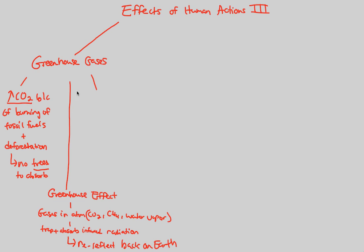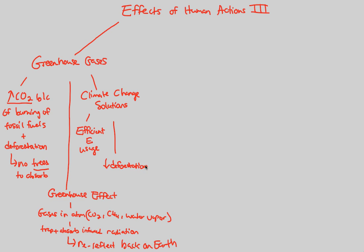Not all is lost, because there are certain climate change solutions that are quite possible and prevalent today. This involves things like efficient energy usage — we see this with our very efficient light bulbs now. Decreasing deforestation, though important, is not happening at as great a rate as we would hope. Also, things like electric cars replace fossil fuels — replacing the burning of gasoline with alternative energy. We have to stop this re-reflection, as you do not want infrared radiation re-reflecting back on the Earth.